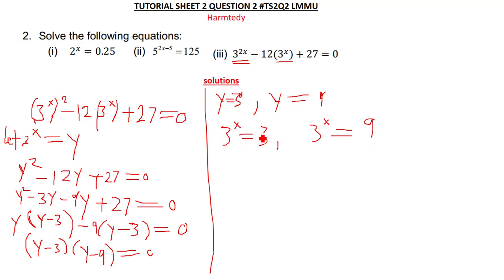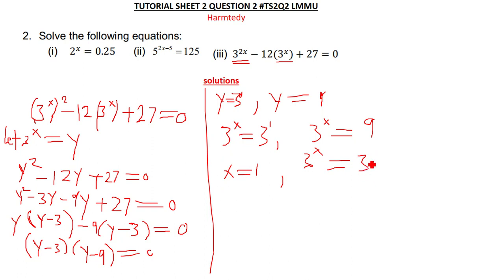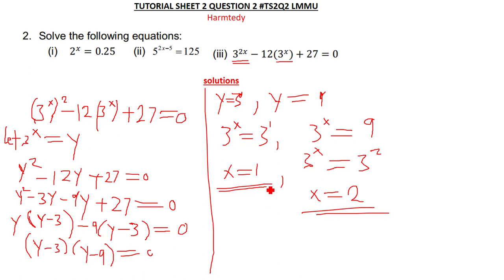Since the bases are the same, the exponents are equal. In the first case, 3^x equals 3^1, so x equals 1. In the second case, 3^x equals 9, which is 3 squared, so x equals 2. If you want to verify these solutions, substitute your values of x back into the original equation and check that you get 0.